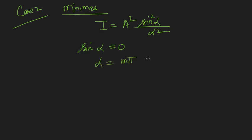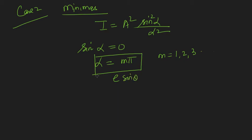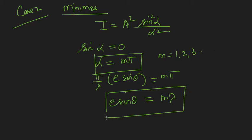When does the numerator become zero? When sinα = 0, that means α = mπ where m = 1, 2, 3, and so on. We cannot take m = 0 because that gives the 0/0 form again. So for α = mπ, I get zero intensity. In terms of path difference: since α = (π/λ)·e·sinθ, we get e·sinθ = mλ. This is the condition for minima in Fraunhofer diffraction due to a single slit.